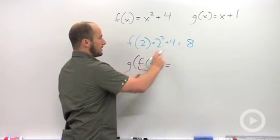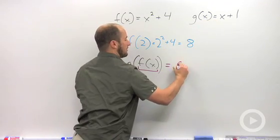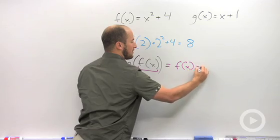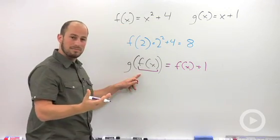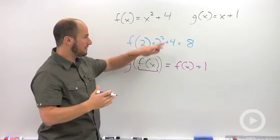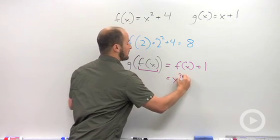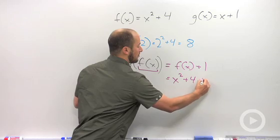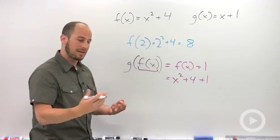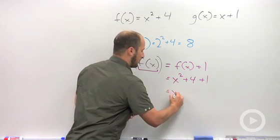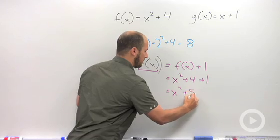So what happens is this ends up being f of x plus 1, just plugging this in for our x. We know what f of x is, so this becomes x squared plus 4 plus 1. Simplifying it out: x squared plus 5.